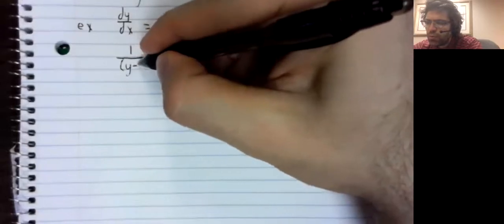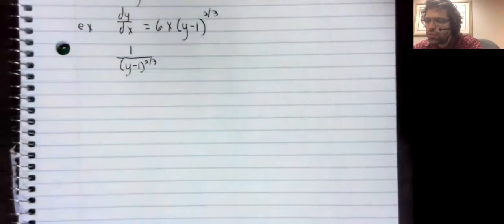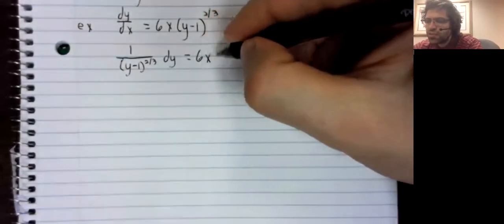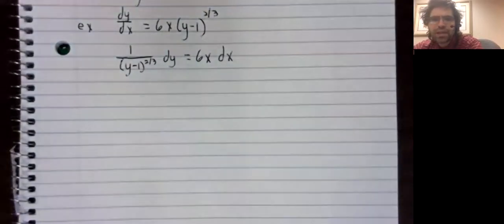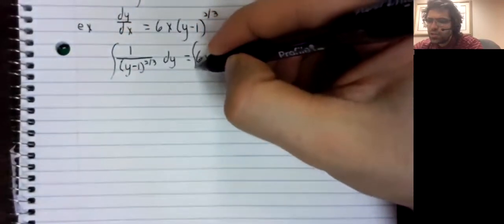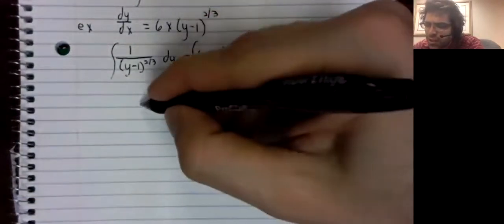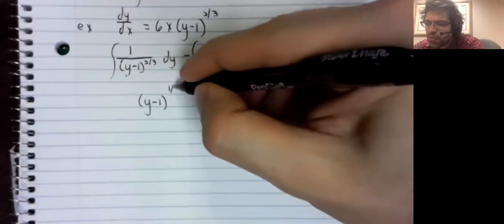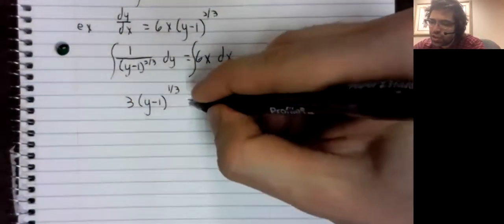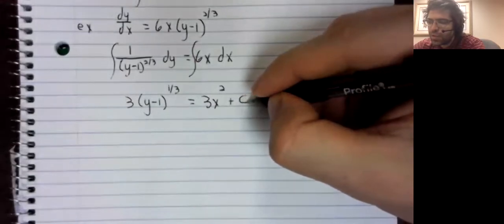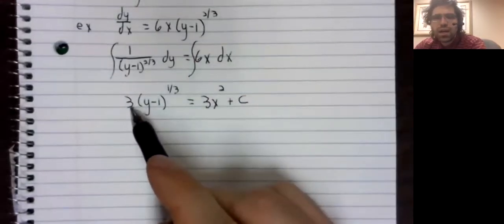1 over (y minus 1) to the 2/3rds power dy equals 6x dx. And we integrate both sides. I said I was going to skim through the details, but I suppose there's really no harm in showing the integration.